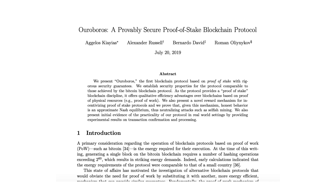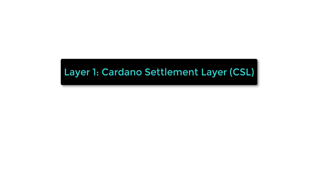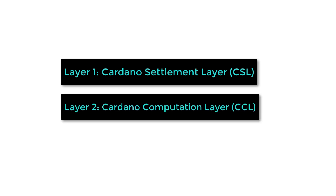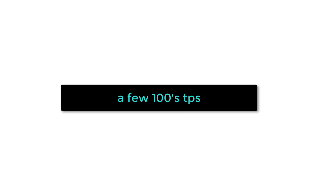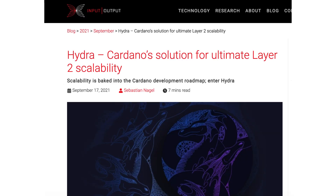The Cardano blockchain uses a proof of stake consensus algorithm called Ouroboros. For every block, the network selects the node that will create the next block. Cardano has two chains: the Cardano Settlement Layer, which records the value changes, and the Cardano Computation Layer, which records why a change has occurred — that's where smart contracts are executed. Cardano can process a few hundred transactions per second and could go up to a few million per second with the Hydra L2 scaling solution.